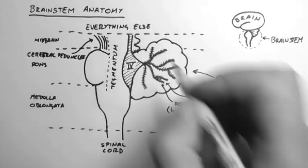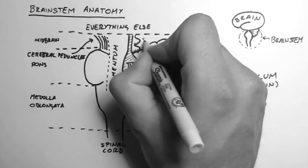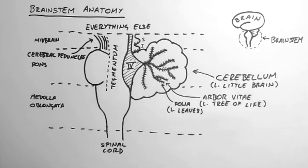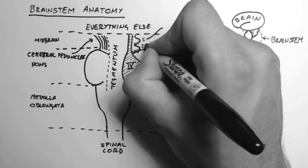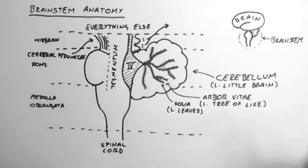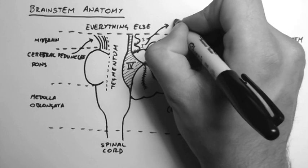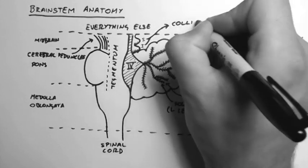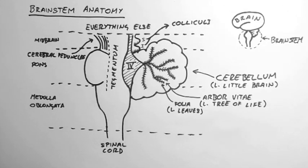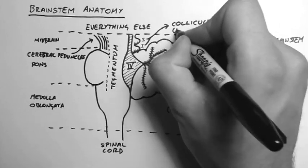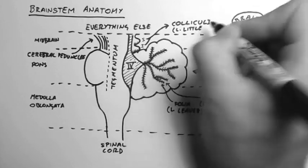Now over here we have two little bumps. A superior bump and an inferior bump. And they are called the colliculi. Or the superior and inferior colliculi. And that's Latin for little hill.